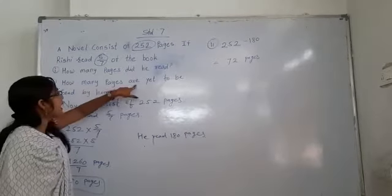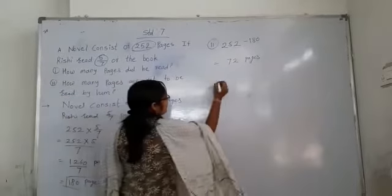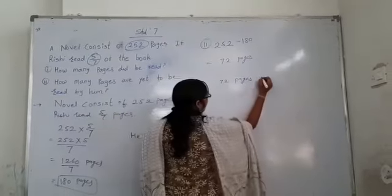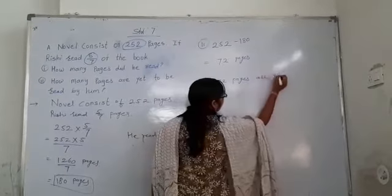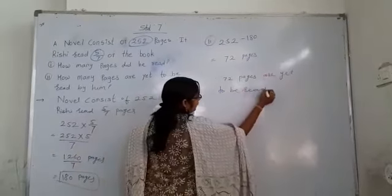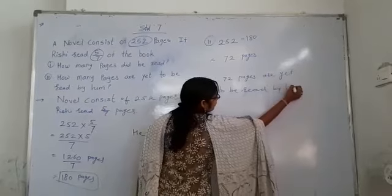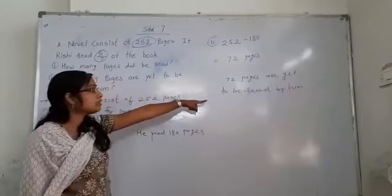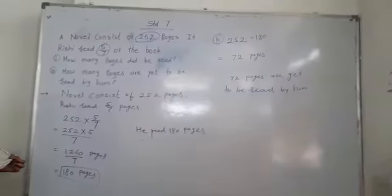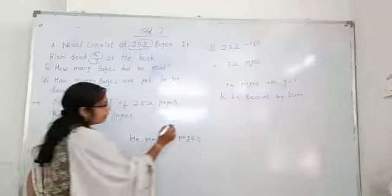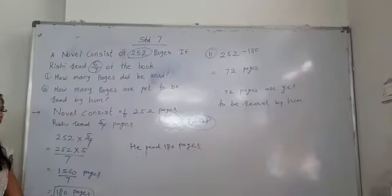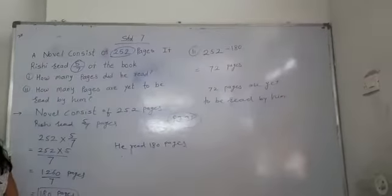What do they ask? How many pages are yet to be read by him? We can write: 72 pages are yet to be read by him. Our second question also done. Understand? This is your word problem in page number 38, question number 9. You have to solve that. Thank you.